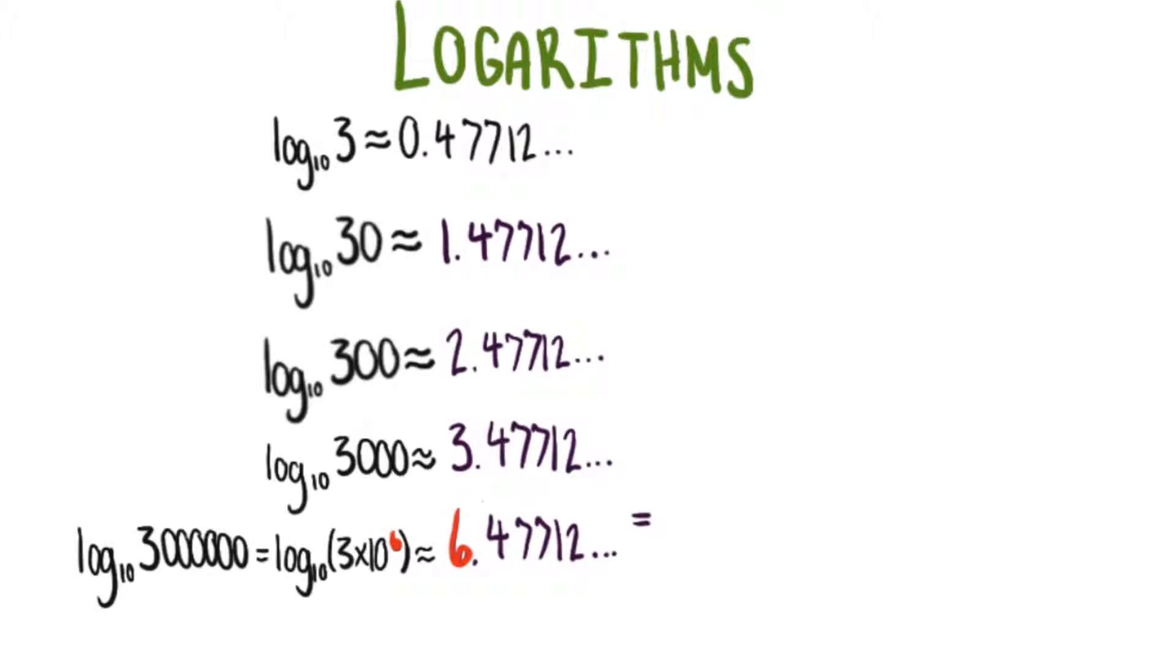Noticing that this decimal here is the same as for log base 10 of 3. It looks like what we have is log base 10 of 3, accounting for the 0.47712.